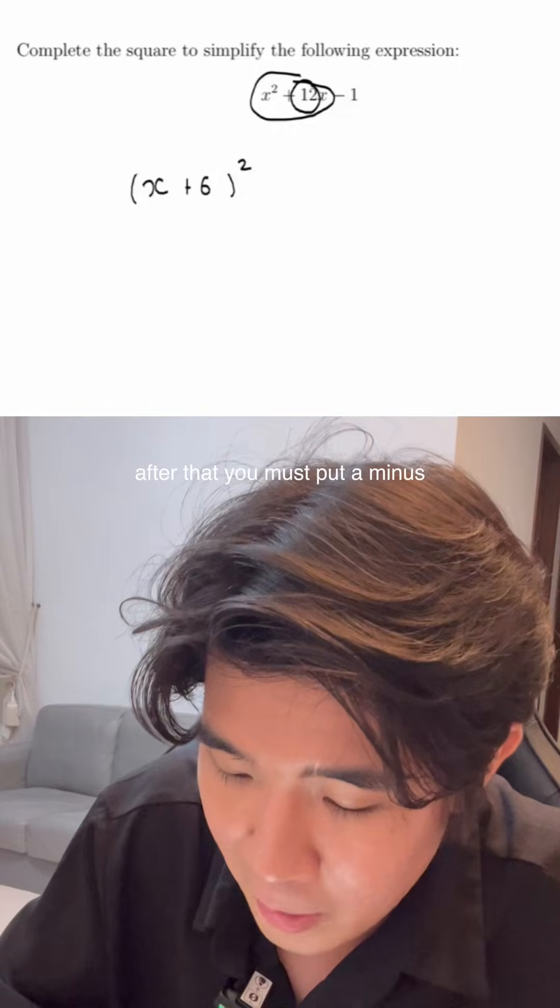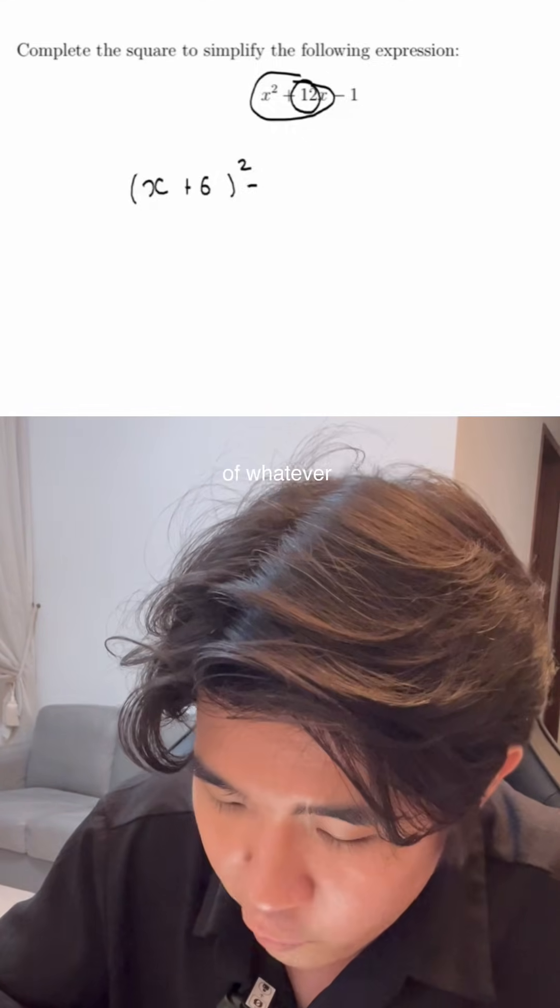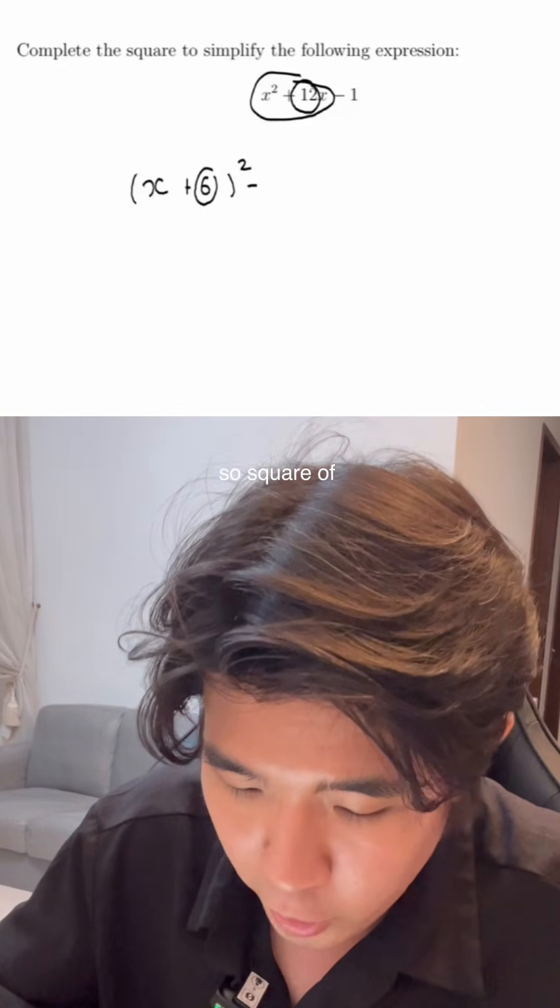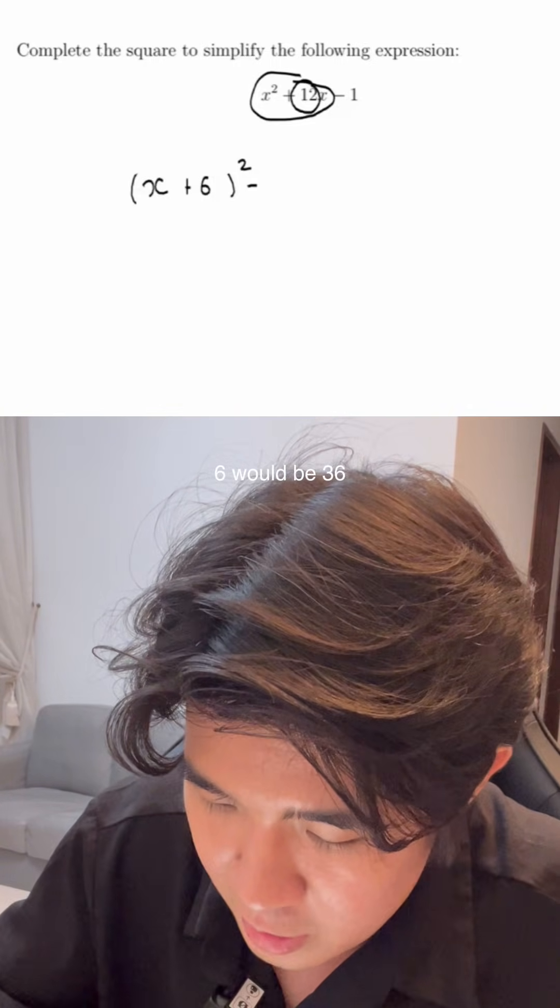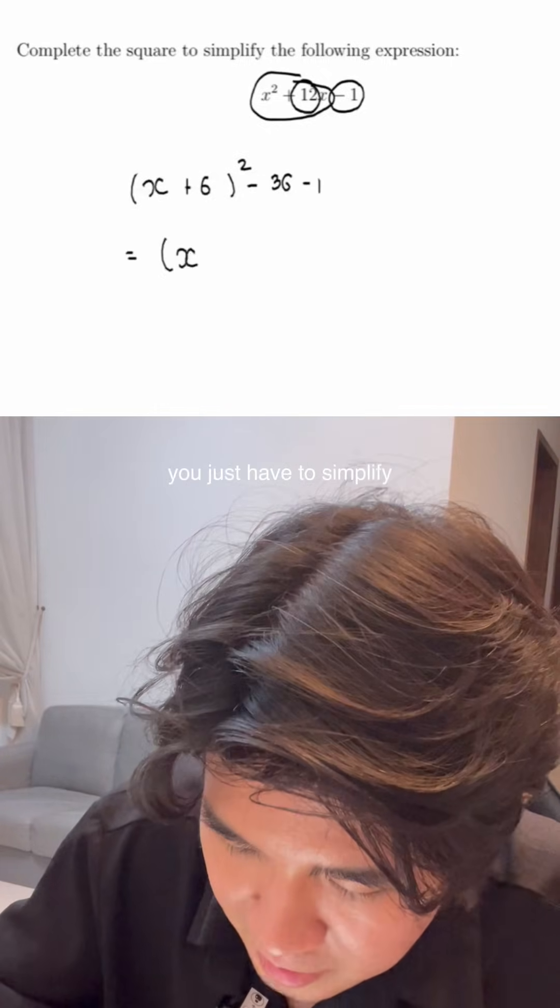And then after that, you must put a minus. This is always a minus, the minus of the square of whatever number you just put inside. So in this case, it is 6. So square of 6 would be 36, followed by minus 1. And now you just have to simplify it.